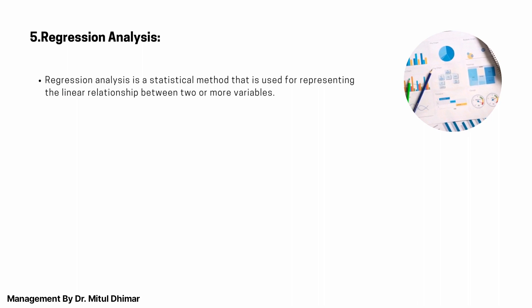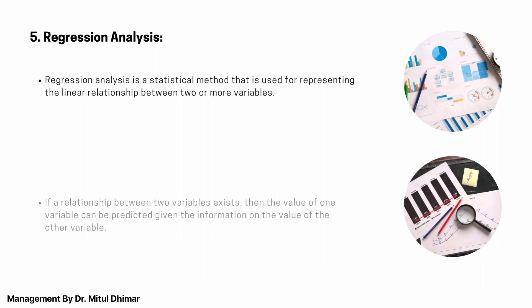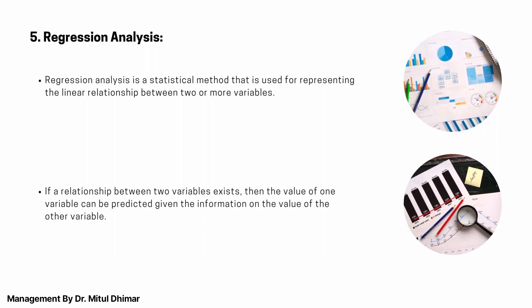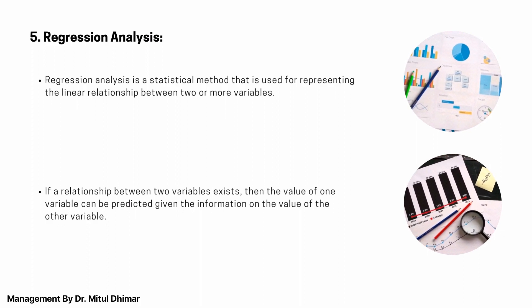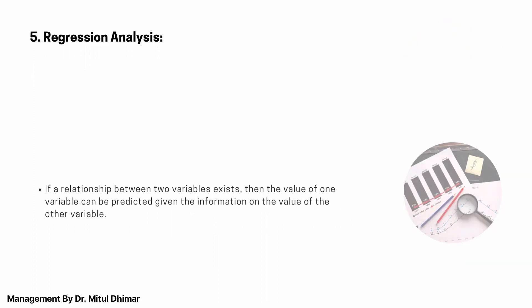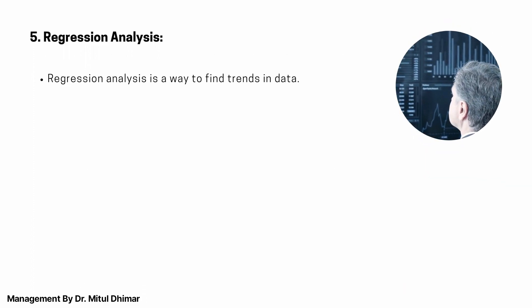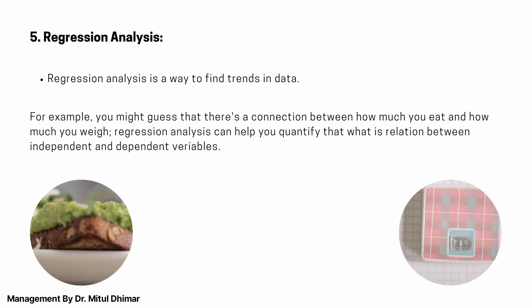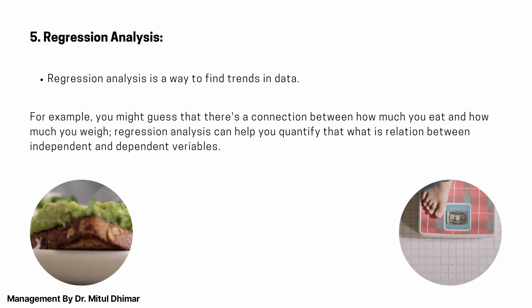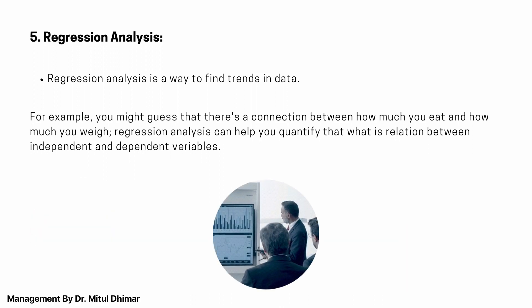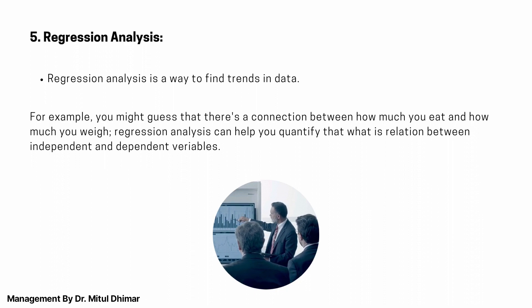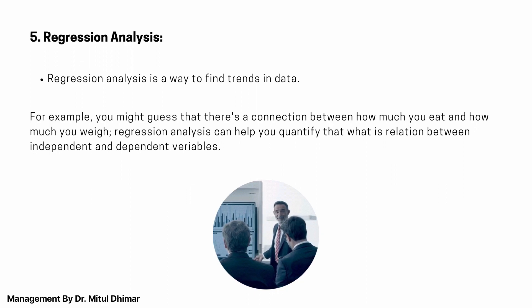Regression analysis. Regression analysis is a statistical method that is used for representing the linear relationship between two or more variables. If a relationship between two variables exists, then the value of one variable can be predicted given the information on the value of the other variable. Regression analysis is a way to find trends in data. For example, you might guess that there is a connection between how much you eat and how much you weigh. Regression analysis can help you quantify the relationship between independent and dependent variables.